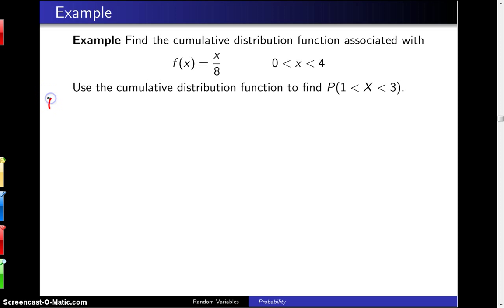In this case, the cumulative distribution function F of x is the probability that the random variable x is less than or equal to little x. Over the interesting portion of this distribution, which is the support of x, this is going to be the integral from 0 up to x of w over 8 dw.